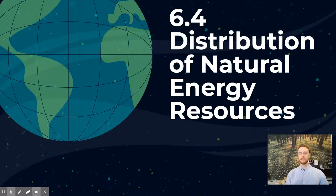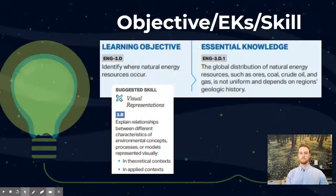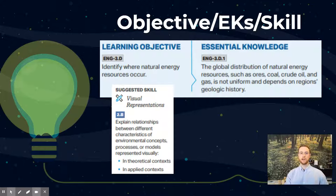Hey AP Environmental Science students, this is Mr. Smeens and today we'll be covering topic 6.4, which is the distribution of natural energy resources across the globe. Our objective for the day is to identify where natural energy resources occur globally, and the skill we'll be practicing at the end of today's video is explaining a relationship or a difference between environmental concepts shown in a visual model.